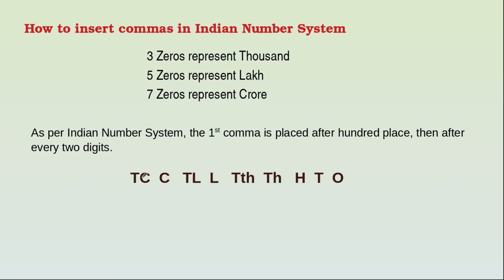So the first comma should be placed after the hundreds place — that is ones, tens, hundred — then a comma, then after every two digits: thousand, ten thousand, then lakh, ten lakh, then crore, ten crores.